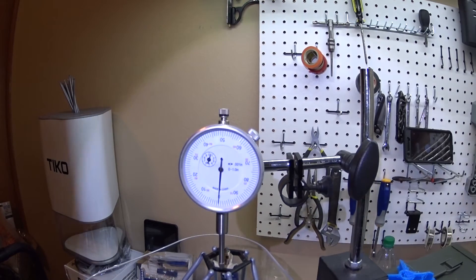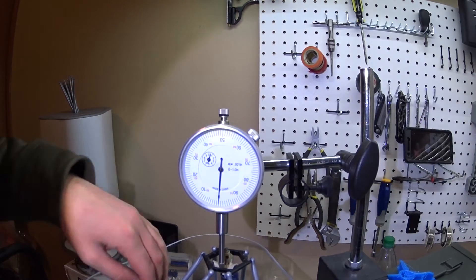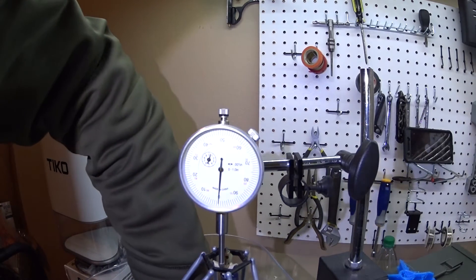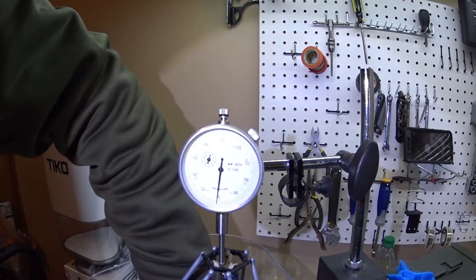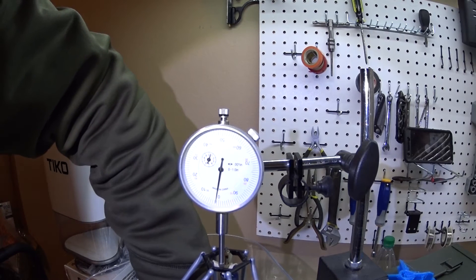So I set up a dial indicator. If I reach down here, this is just for the motor, nothing with the arms. What I'm doing is I'm rocking the motor.